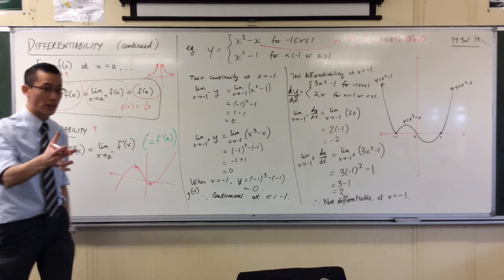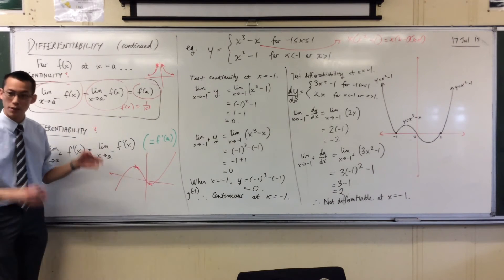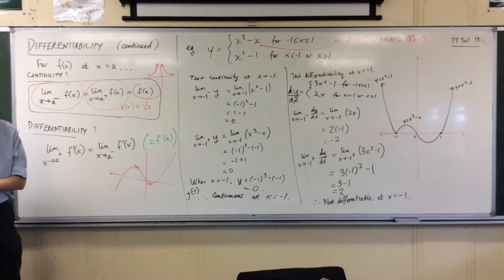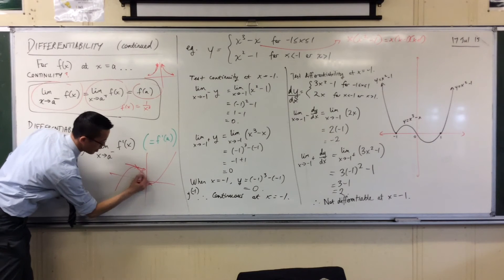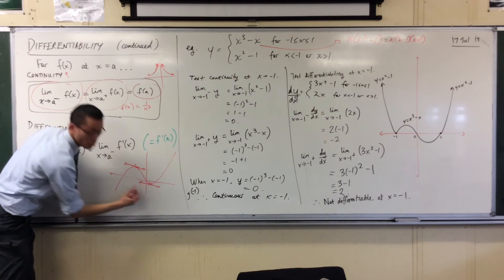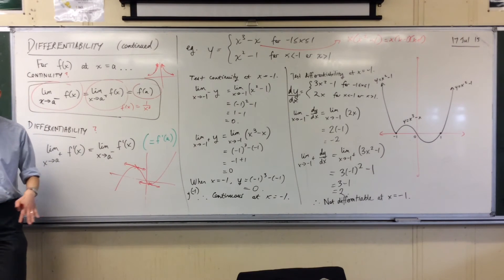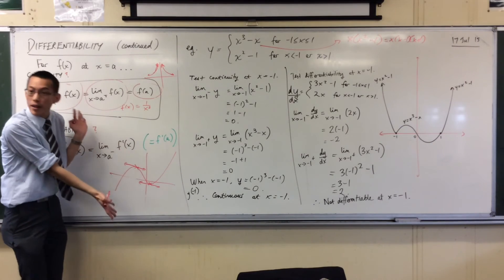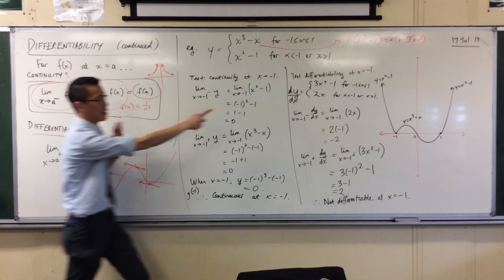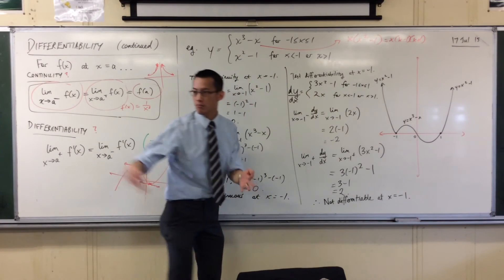But now you know calculus. The significance of these two points is if you were to draw a tangent. Do you guys know how to find tangents? The tangents here and here will be horizontal, which corresponds to a gradient of zero, right? So if you find where the gradient's zero, where the derivatives are zero, then off you go.